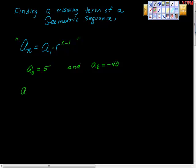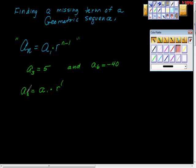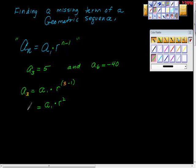The first thing I'll remind myself is that the third term is equal to the first term times the common ratio to the 3 minus 1 power — that's r squared. And since the third term is 5, we get: 5 equals a sub 1 times r squared. I'm going to call this the first equation — you'll see why in just a second.